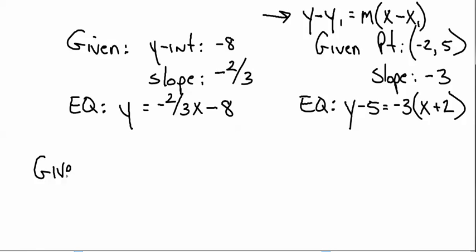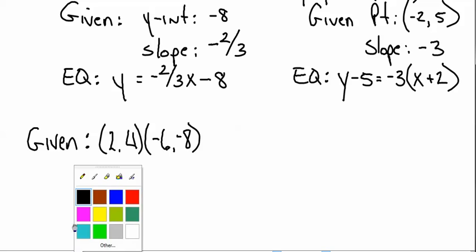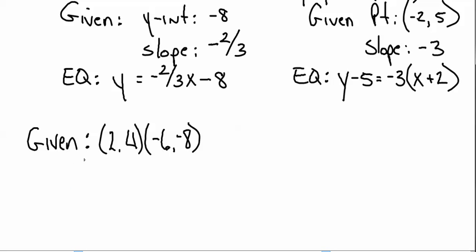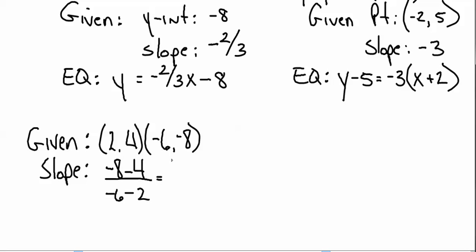Now let's say you're given two points and you're asked to write the equation. What are you missing? You're missing the slope, so you have to figure the slope. That's y2 minus y1 over x2 minus x1. What's negative 8 minus 4? Negative 12. And negative 6 minus 2? Negative 8. What's a negative divided by a negative? Positive — and that is 3 over 2.